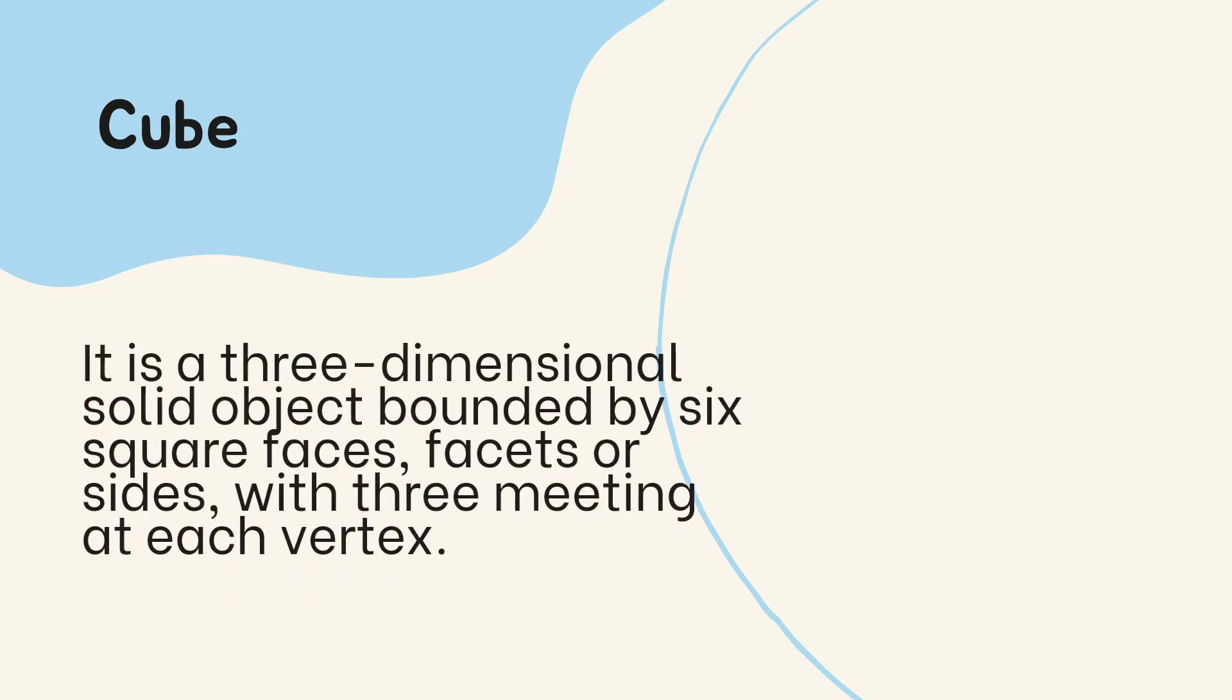Now, let's have cube. Volume can be visualized for three-dimensional figures only. A cube is a three-dimensional solid object bounded by six square faces, facets, or sides with three meeting at each vertex.